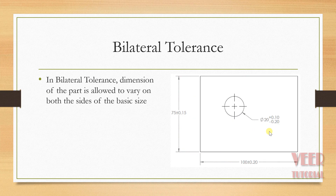In a similar way, we have bilateral tolerances. In bilateral tolerances, the dimension of the part is allowed to vary on both sides of the basic size. For example, we can see 75 plus minus 0.15, so we subtract 0.15 from 75 and also add it. Similarly, for the 20 diametrical dimension, we have 20 plus 0.10 or 20 minus 0.2. In this way, we can insert unilateral or bilateral tolerance according to our requirement.